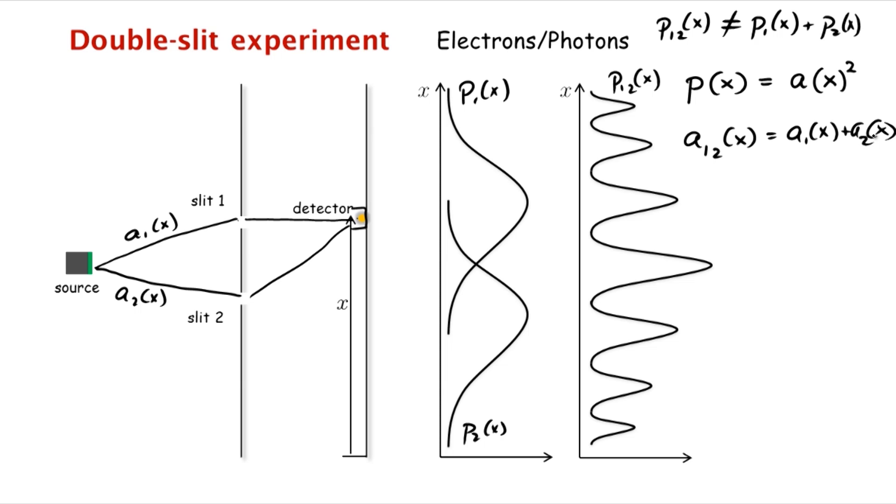And so once again, we see what we saw in the case of water waves, where p12 of x is a12 of x whole squared. It's the square of this probability amplitude, which is not equal to a1 of x squared plus a2 of x squared, which is of course p1 of x and p2 of x.